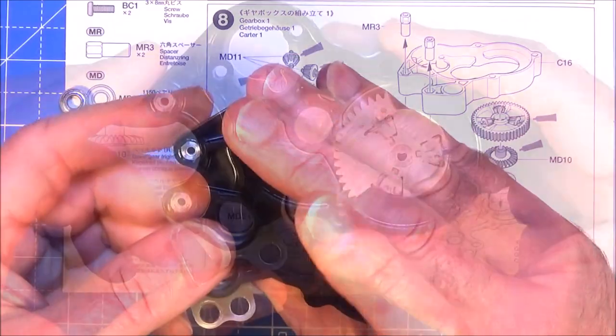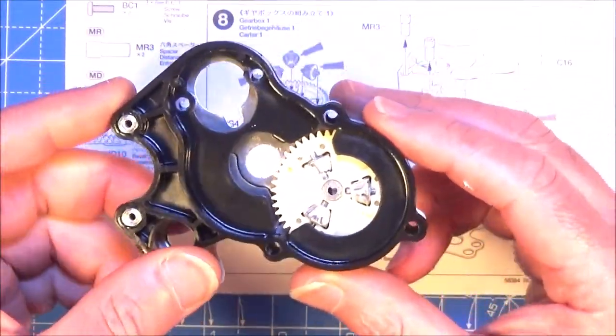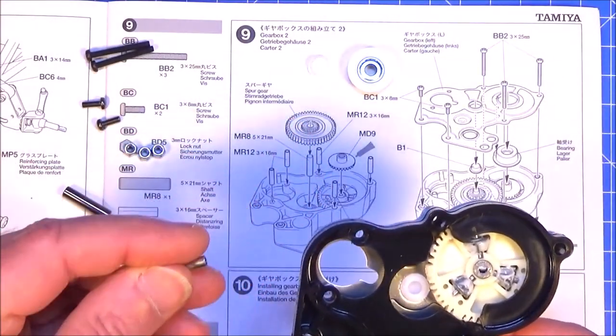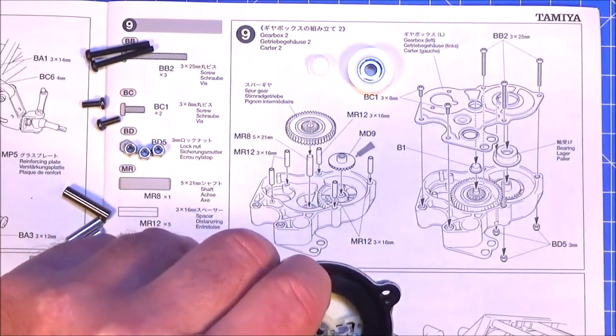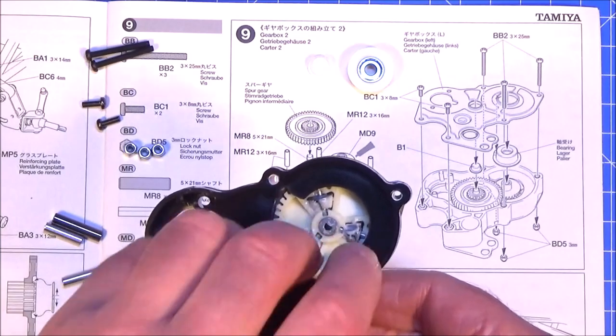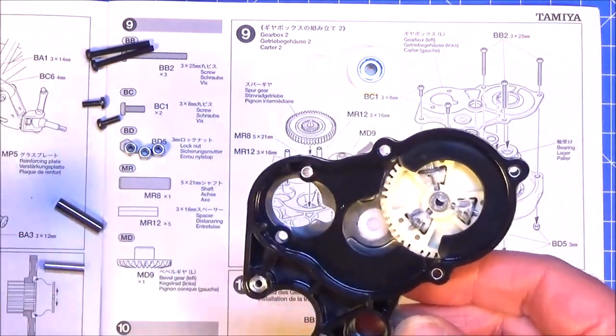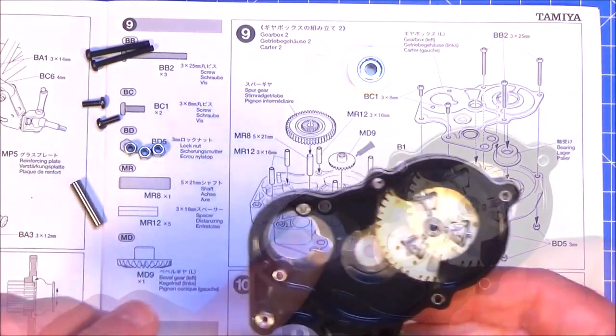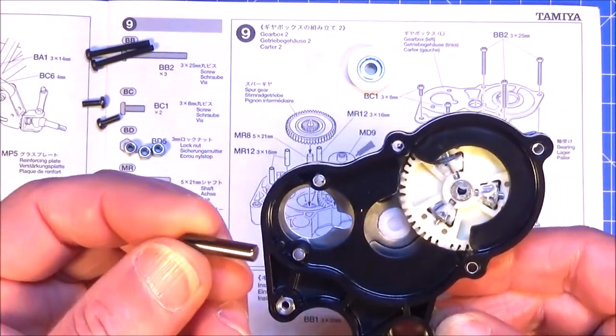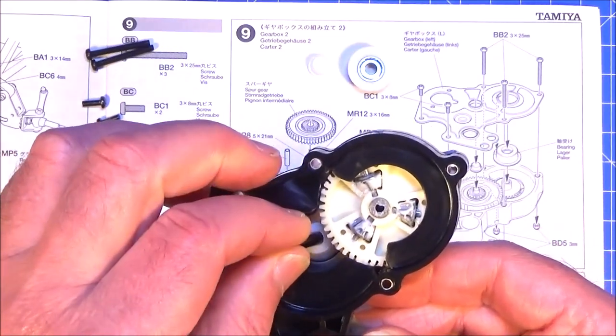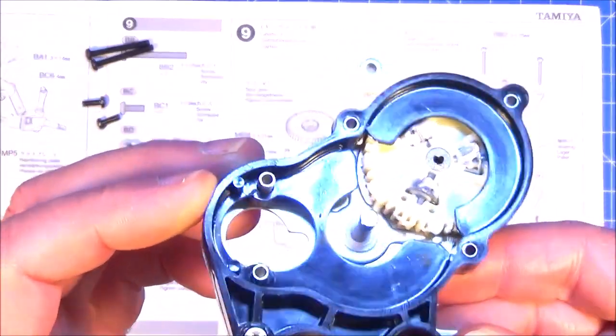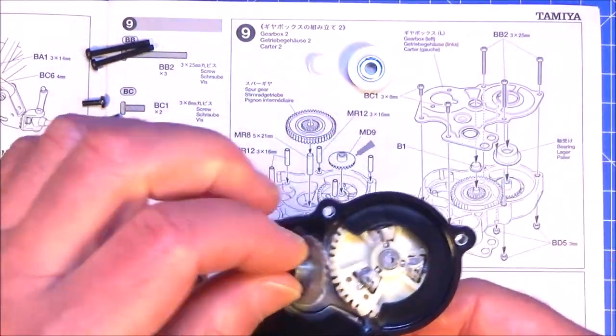So don't go crazy tightening these up too much because they will be coming out again soon. So that's that on to step number 9. First off get your five metal spacers and they need to go into the holes two, three, four and five.